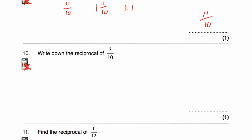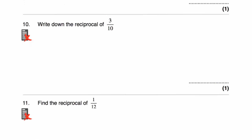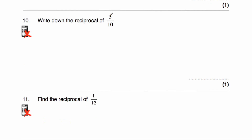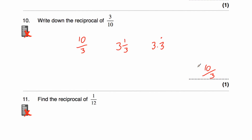Question 10: write down the reciprocal of 3 tenths. Flipping 3 tenths over gives 10 thirds — that could be our answer. As a mixed number: 3 into 10 goes 3 times (that's 9), remainder 1 and a third, so 3 and a third. Or as a decimal: 10 divided by 3 is 3.3 recurring. I would go for 10 thirds unless asked for a mixed number or decimal.